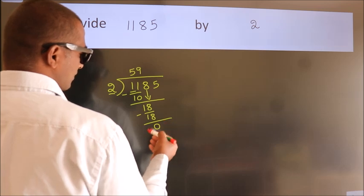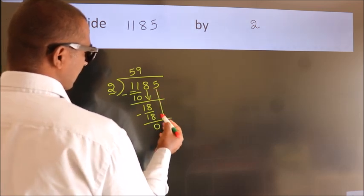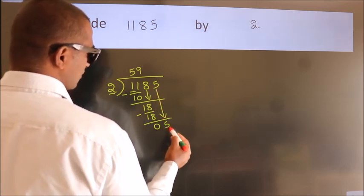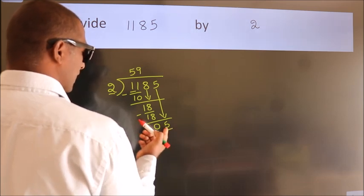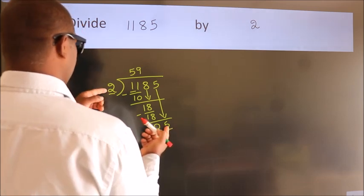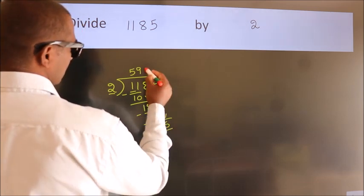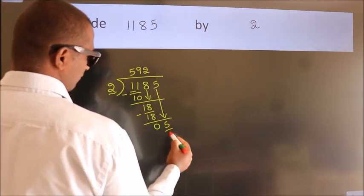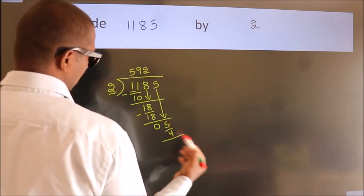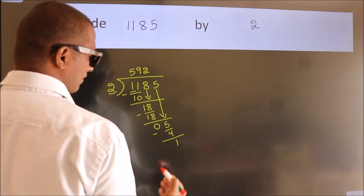After this, bring down the beside number. So 5 down, so 5. A number close to 5 in 2 table is 2 times 2 equals 4. Now we subtract, we get 1.